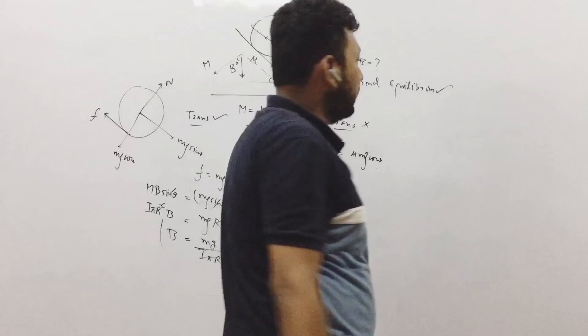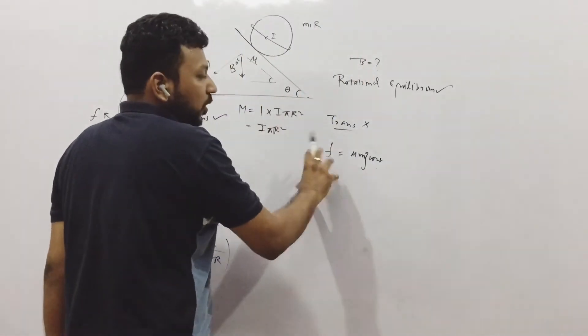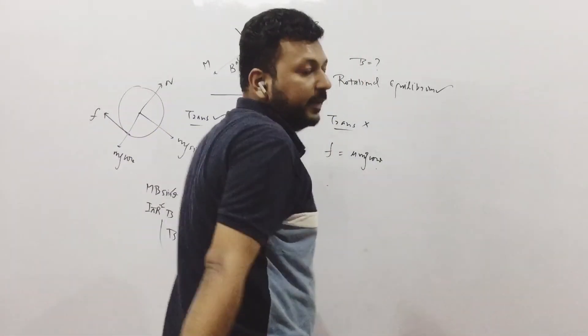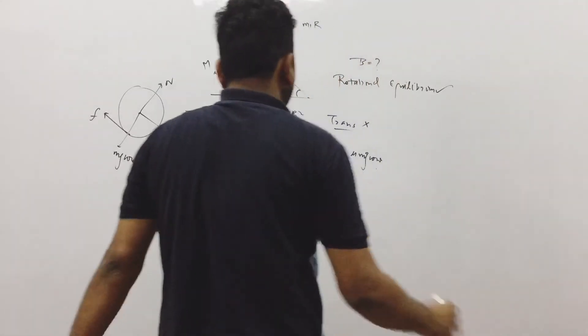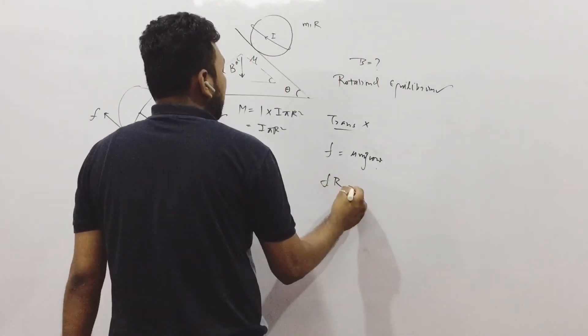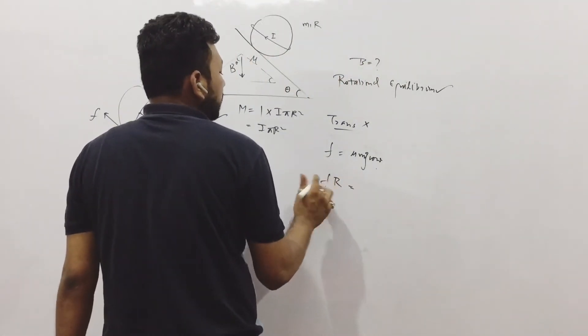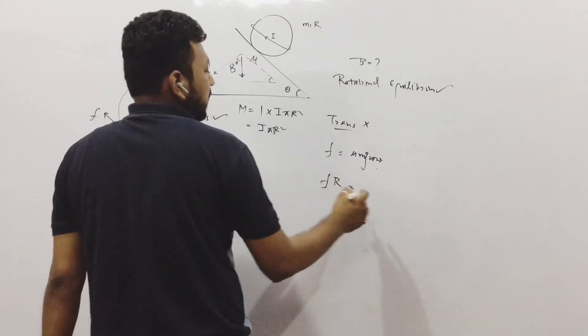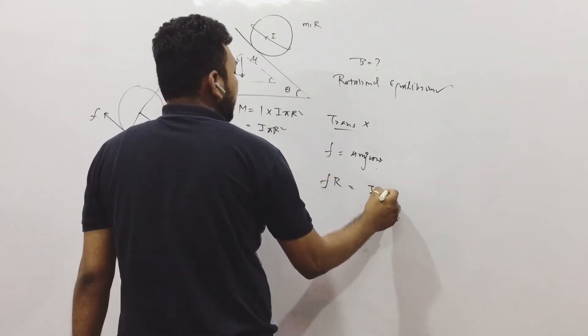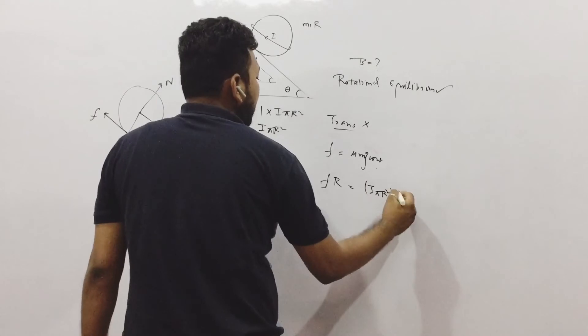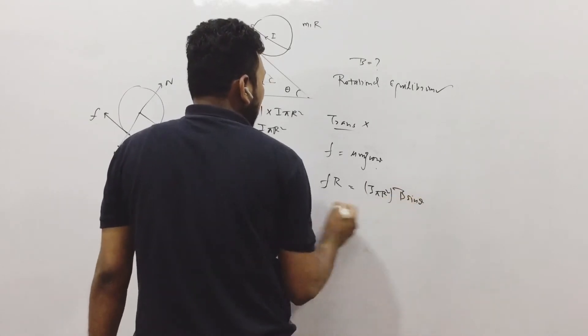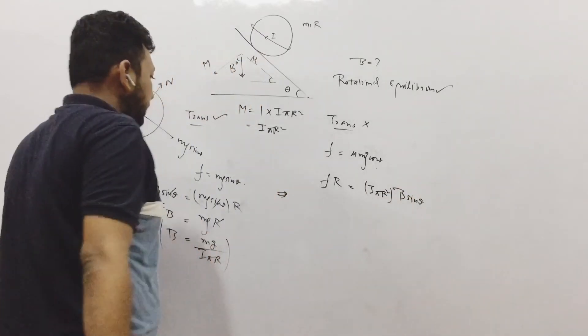If it was not in translational equilibrium, that means it is not rotating but it was moving. Then the friction is maximum. Then we can write F into R is equal to the torque of friction is equal to torque of this. That is again, I pi R square M B sin theta.